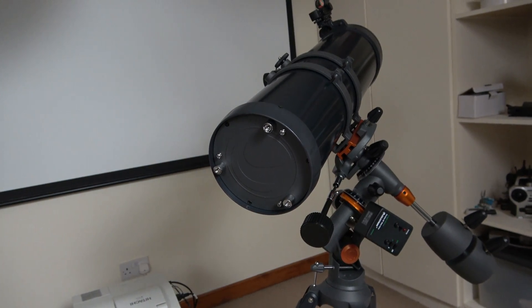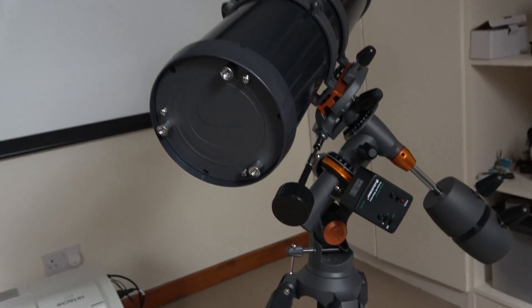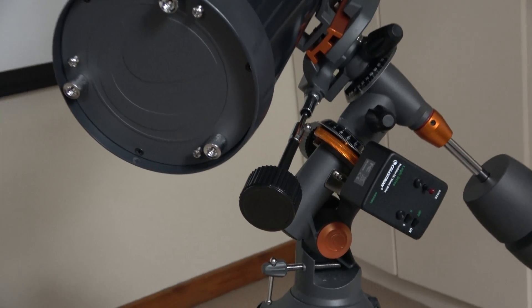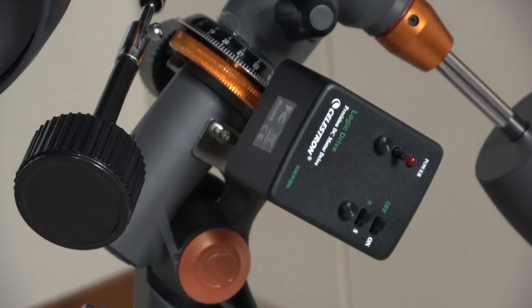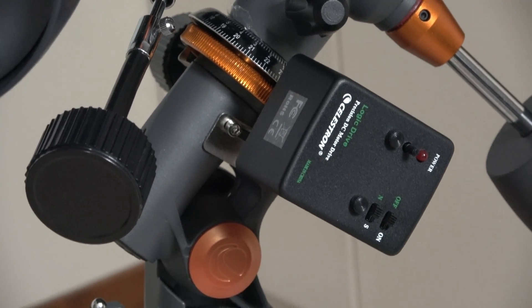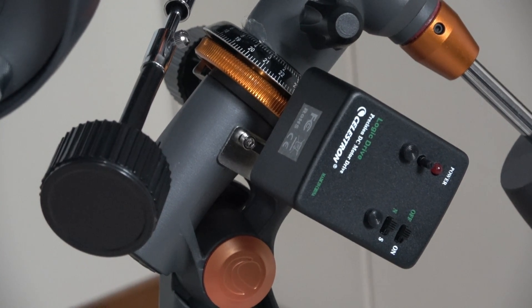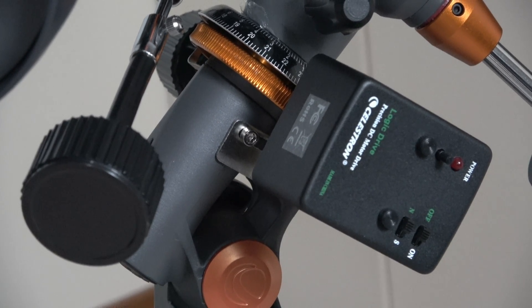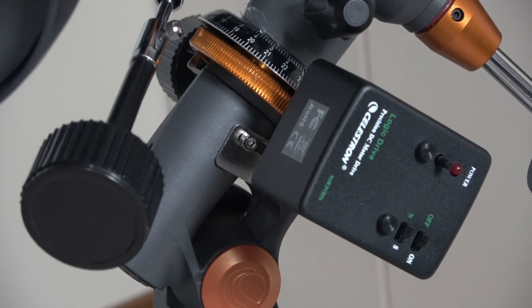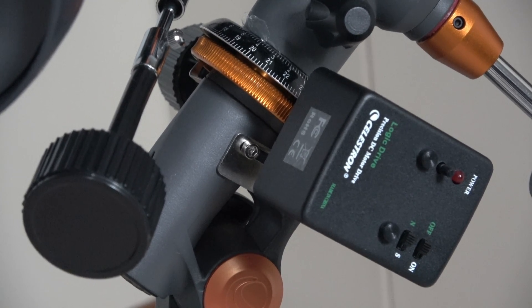Here's my Astro Master 130 EQ telescope. I'm going to show you this small motor that I fitted to it. This motor fits onto the mount and the slow motion cable, and it allows you to track stars without having to constantly adjust the telescope because the motor will follow the rotation of the earth. It seems quite a daunting thing to fit a motor onto your telescope, but I was surprised how easy it is. So I'll show you in this video just how easy it is to get this set up and running on your telescope.